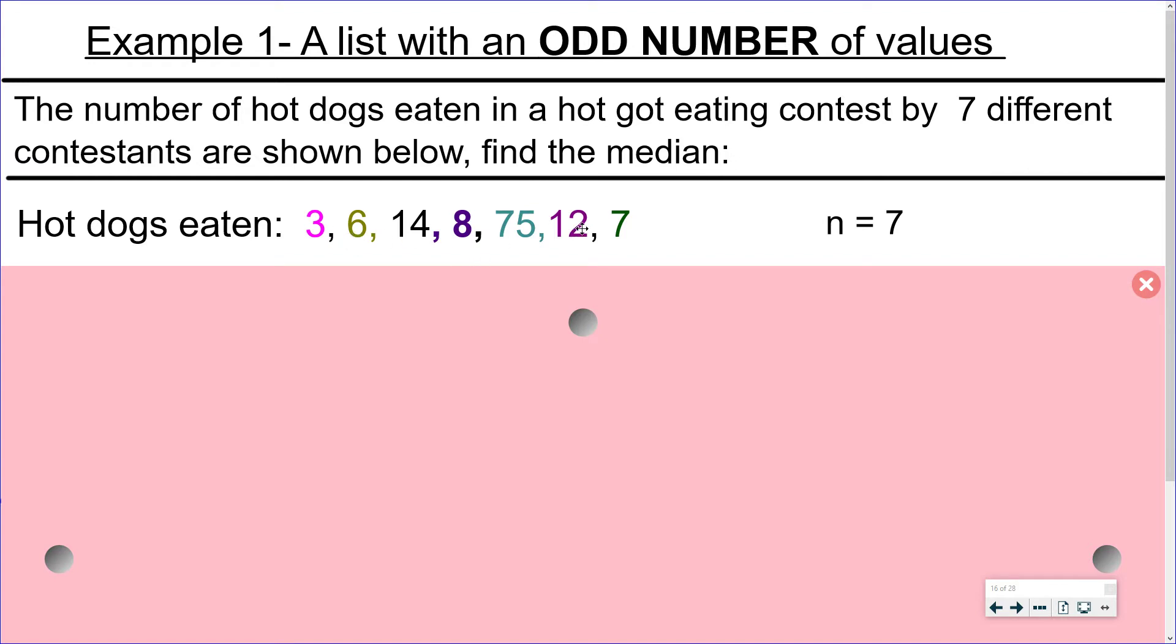So we have our list here and the first thing we need to point out is that there are seven numbers in the list and seven is an odd number. Now the median is the middle number of an ordered list of numbers. So we need to put these numbers in order. It doesn't matter whether you order them from smallest to largest or the other way around, but you have to do it in one of those ways.